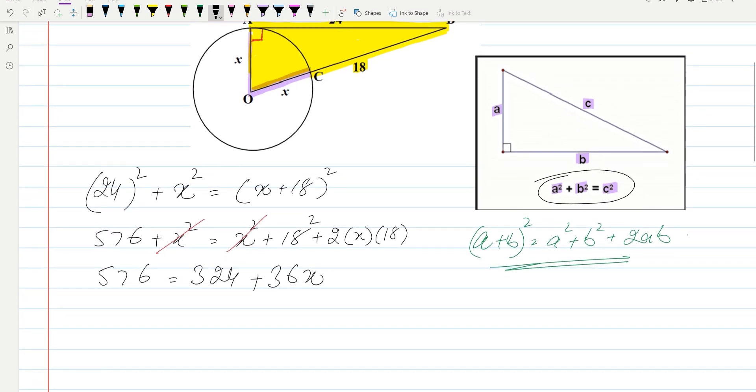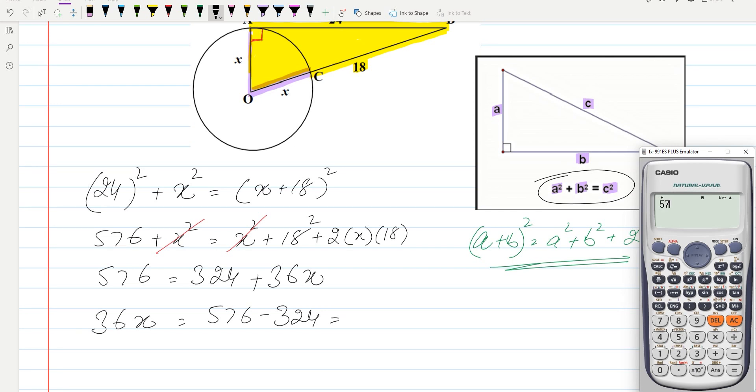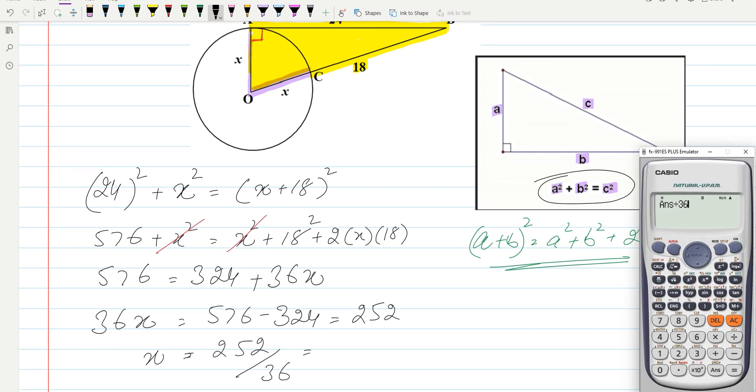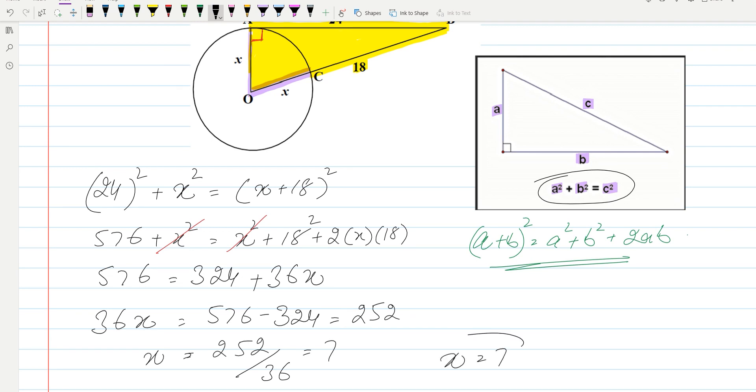Now we can simplify. We can rewrite it as 36x equals 576 minus 324, and this will equal 252. So x value will equal 252 divided by 36, which equals 7. So x value is equal to 7.